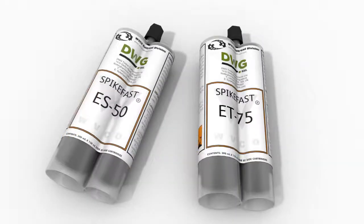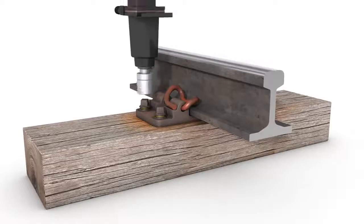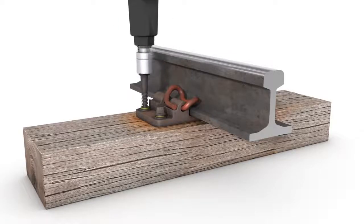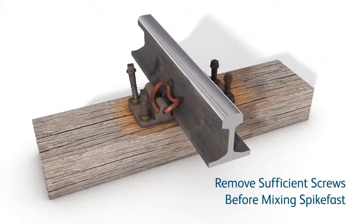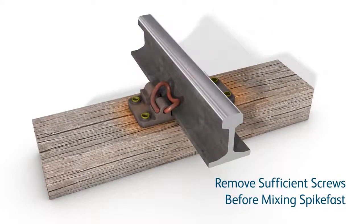This is the correct procedure for installing SpikeFast and applies to both SpikeFast ET75 or ES50. Start by removing the chair screws. Ensure that you have removed sufficient chair screws before moving on and mixing SpikeFast, as it sets quickly and can go off in the mixing tube if not kept moving.